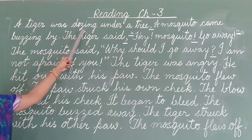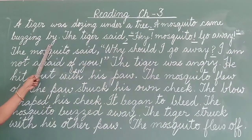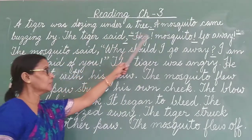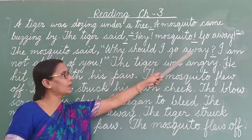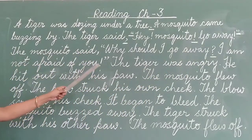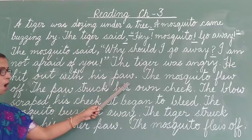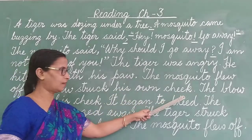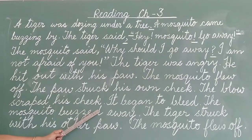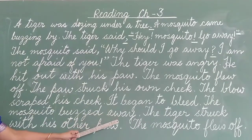A tiger was dozing under a tree. A mosquito came buzzing by. The tiger said, 'Hey, mosquito! Go away!' The mosquito said, 'Why should I go away? I am not afraid of you.' The tiger was angry. He hit out with his paw. The mosquito flew up. The paw struck his own cheek. The blow scraped his cheek. It began to bleed. The mosquito buzzed away. The tiger struck his own cheek.